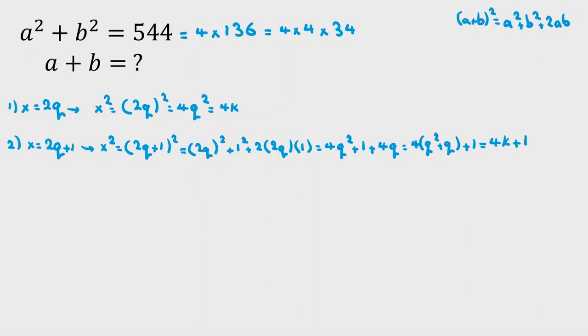Now, at first we have a squared plus b squared equal to 544, which the remainder when divided by 4 is 0, because it is 4 times 4 times 34. A squared, we say it is 0, 1, 0, 1. The only possible case, because 1, 1 is 2 remainder. The only possible case is 0, 0. So we conclude, a and b are even numbers.